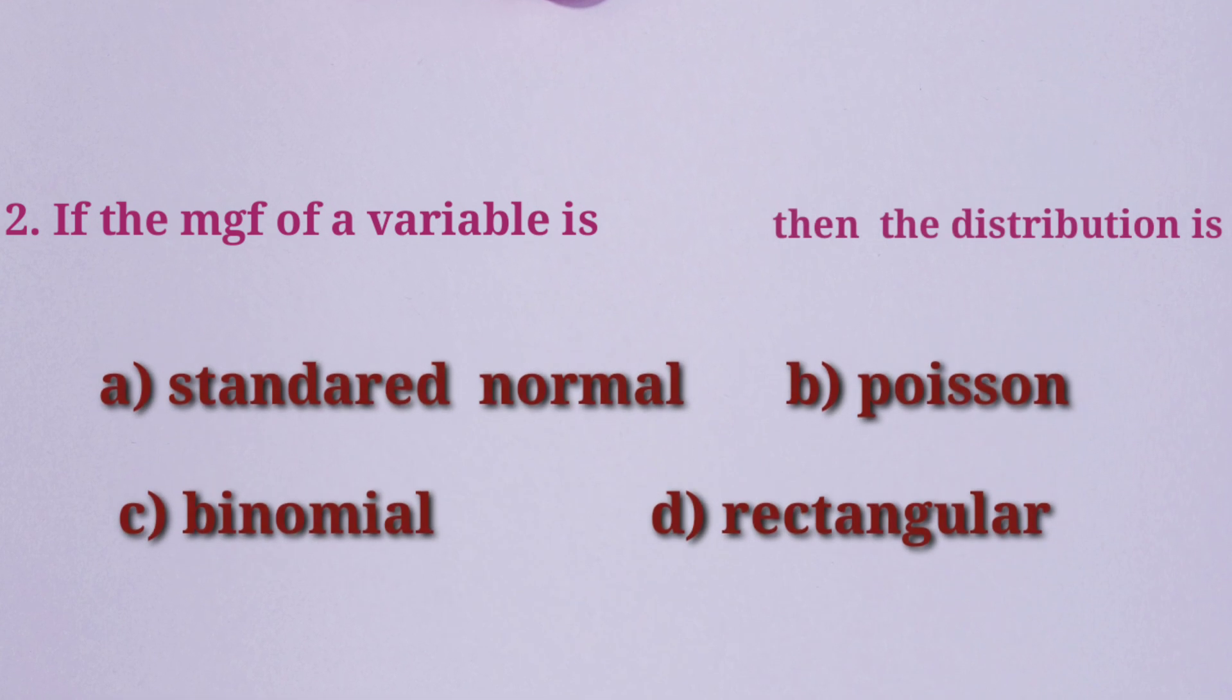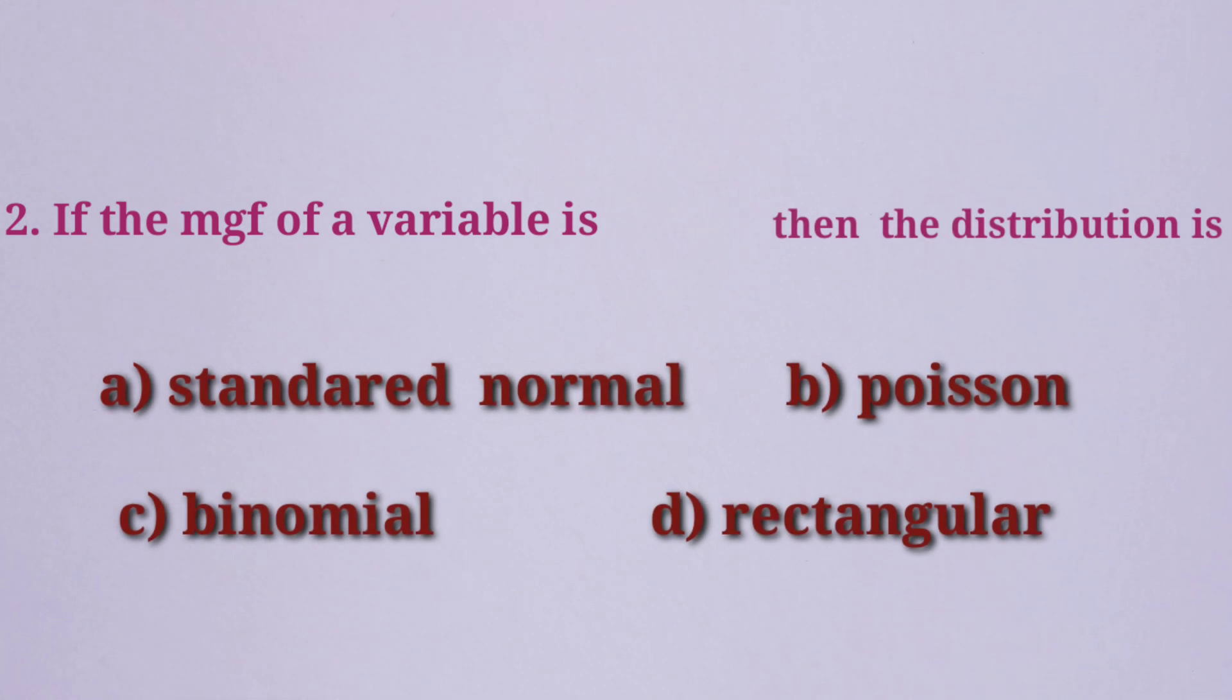Question number 2: If the MGF of a variable is e raised to t square by 2, then the distribution is: Option A: Standard Normal, Option B: Poisson, Option C: Binomial, Option D: Rectangular.